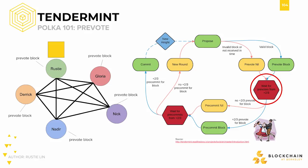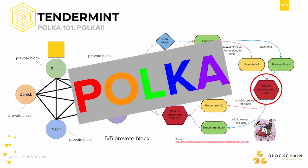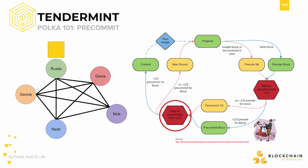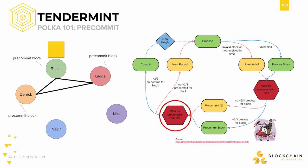Let's say everyone pre-votes for the block before time's up, which means we have five out of five pre-votes for the block — that's more than two-thirds. Yay! That's a polka! So now we're on the next phase, which is pre-commit. Everyone who originally voted pre-vote block in the last phase should be voting pre-commit block this time around. Uh-oh! Looks like there was a network partition, and both Nadir, myself, and Nick are separated from the rest of the network. Maybe my computer crashed and Nick's neighborhood had a blackout. Derek, Gloria, and Rusty all pre-commit the block.